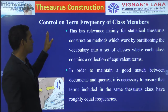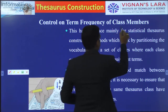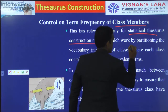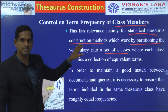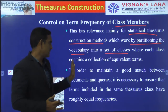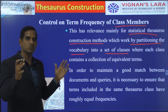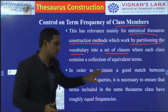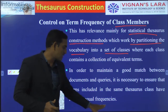The next feature of your thesaurus is the control on the term frequency of your class members. This has relevance mainly for statistical thesaurus construction methods, which work by partitioning the vocabulary into a set of classes, each class containing a collection of terms. In order to maintain a good match between documents and queries, it is necessary to ensure the terms included in the same thesaurus class have roughly equal frequency.